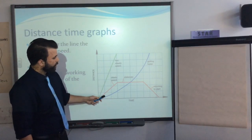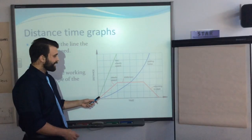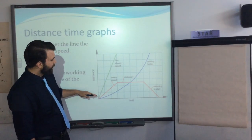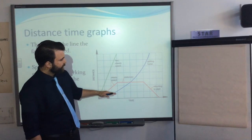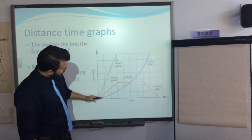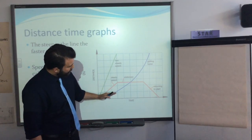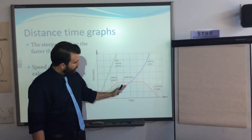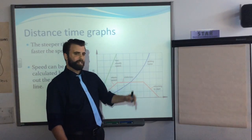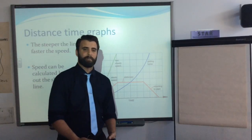If you get a curved line on a distance-time graph, it still shows the object getting faster. This tells us there's acceleration: distance is increasing, but the time intervals over which it increases are getting shorter, meaning the object is speeding up.